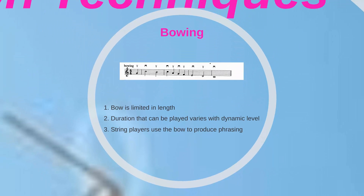An important difference is that the bow can be used in both directions, whereas the wind player must stop to breathe. This means that the strings can be played for long periods of time without stopping. The slur is used in string parts to show groups of notes that are to be played under a single bow.